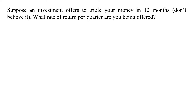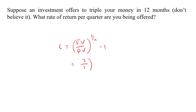The n is the number of periods, that is 4, equal to the quarters in a year. So if we apply the compound interest rate formula, the interest rate will be equal to future value divided by present value, raised to the power 1/n, minus 1. Future value is 3 and present value is 1, so the interest rate is 3/1 raised to 1/4, minus 1.